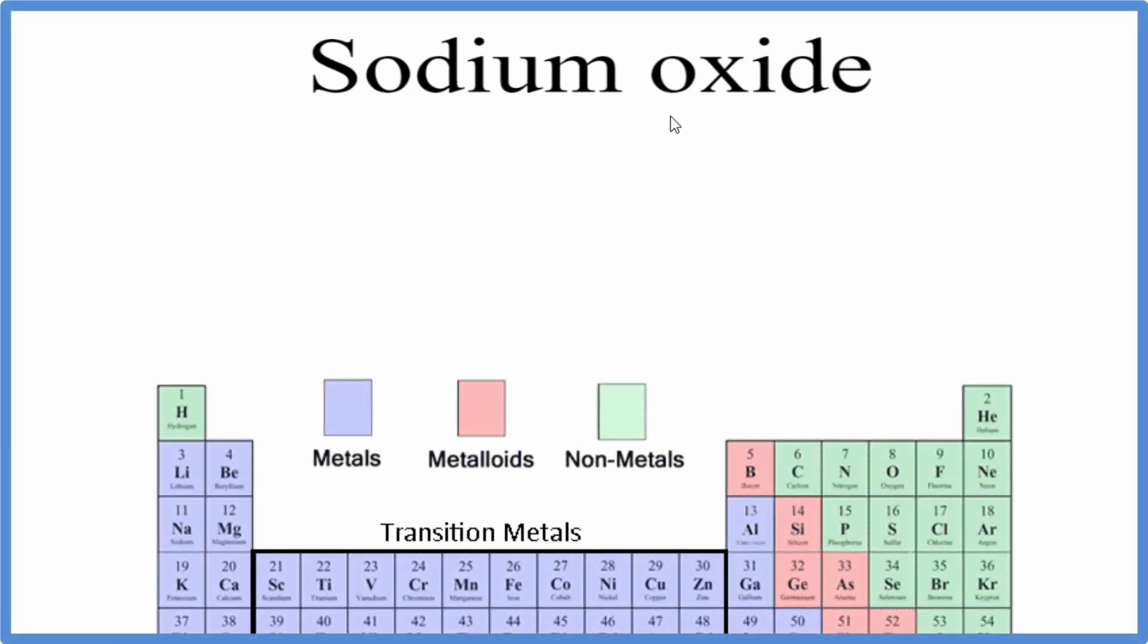For sodium oxide, to write the formula, we look up sodium on the periodic table. Sodium is Na, and then oxide, we're looking for oxygen, and that's just O.